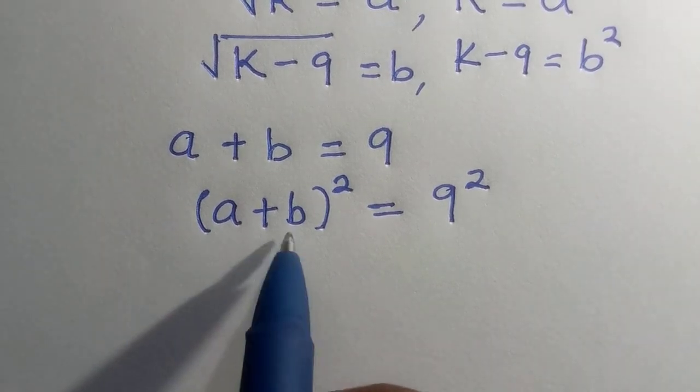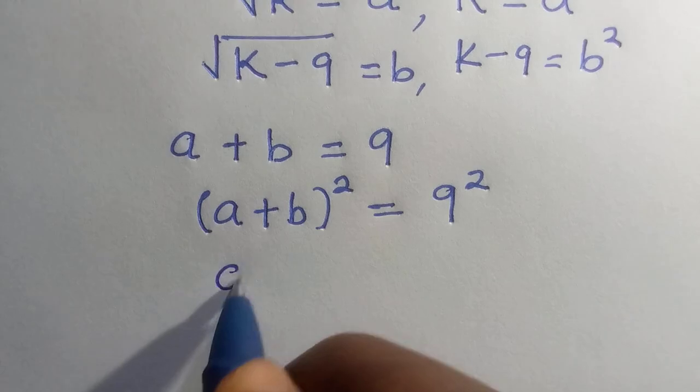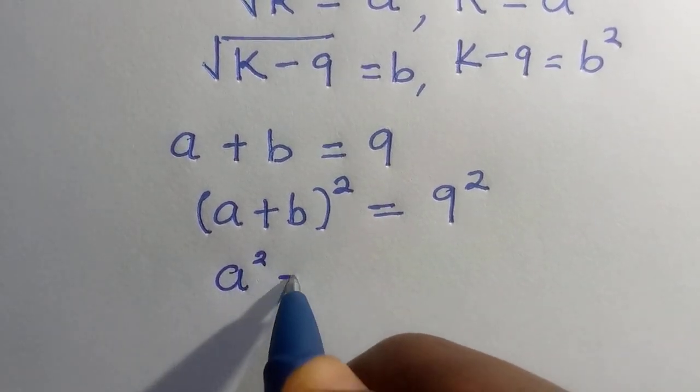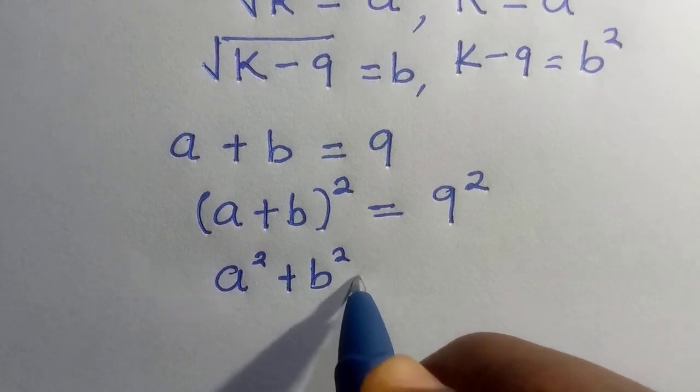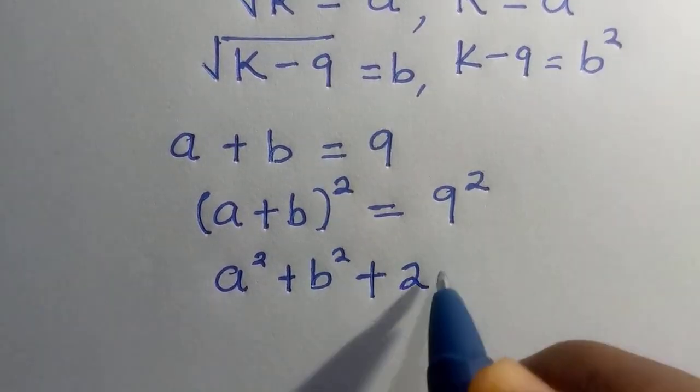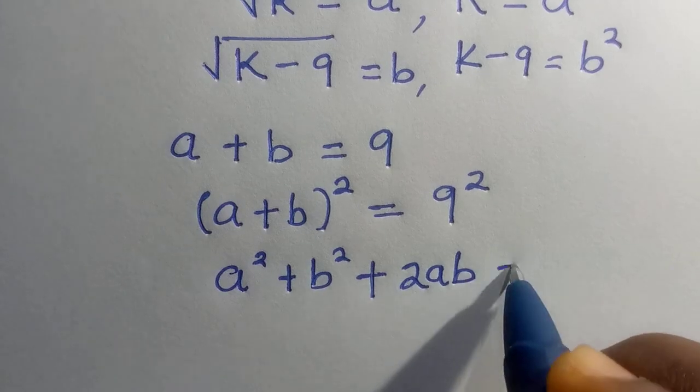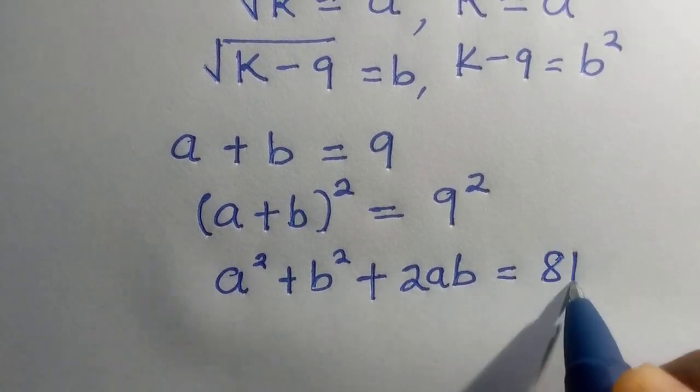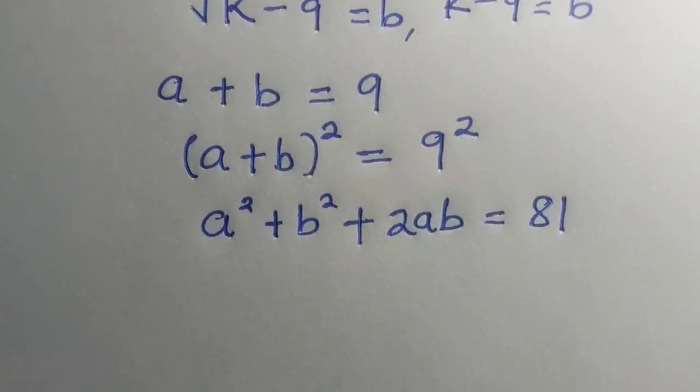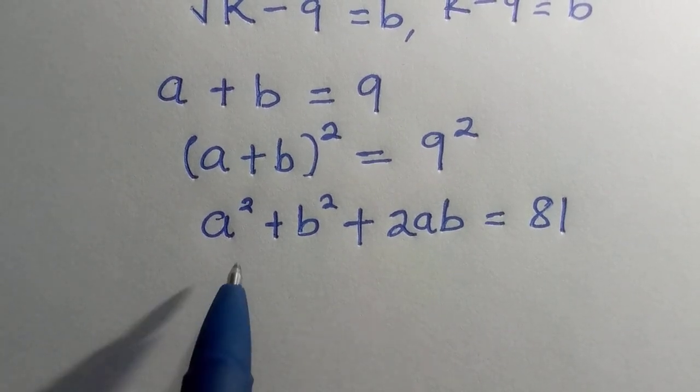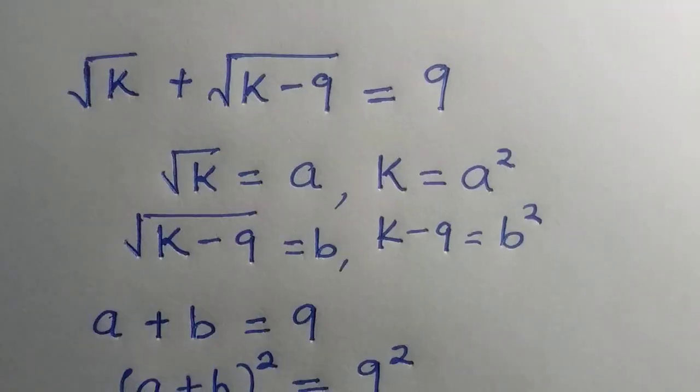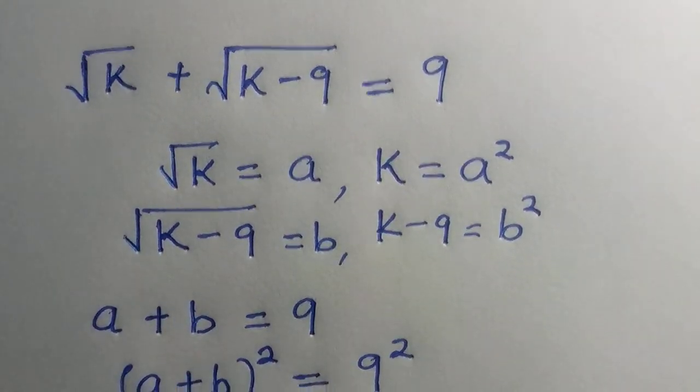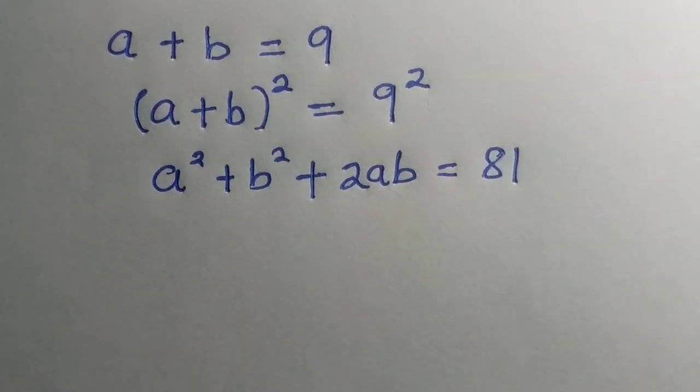And again, a plus b square is given as a square plus b square plus 2ab equals 81. Here we have a square, but our a square is given as k and b square is given as k minus 9.